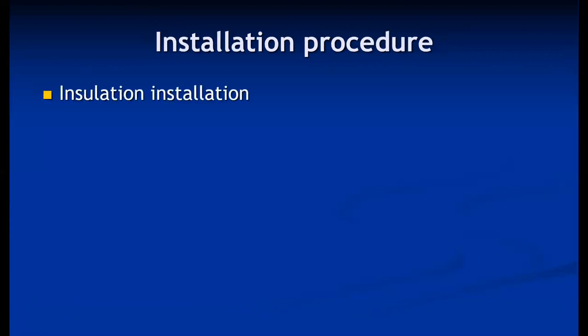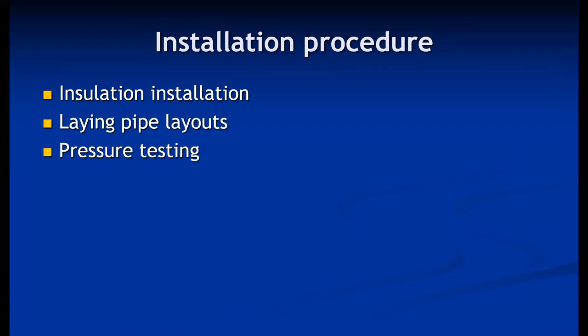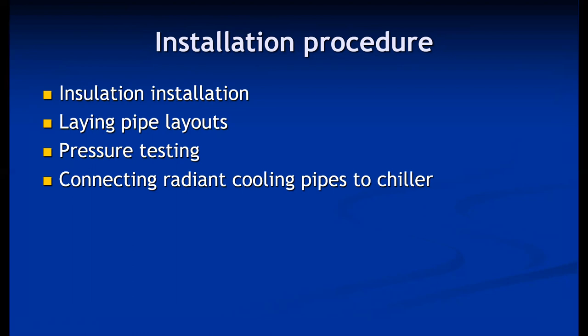As far as installation procedure is concerned: first, insulation is installed; then laying out pipe layouts; then pressure testing is important because leaks are not allowable — in case of a leak, surfaces become wet, leading to fungus and bacterial growth. Leak testing is an essential part of the piping installation. Finally, connecting radiant cooling pipes to the chiller and commissioning of the system are the important steps of radiant cooling system installation.